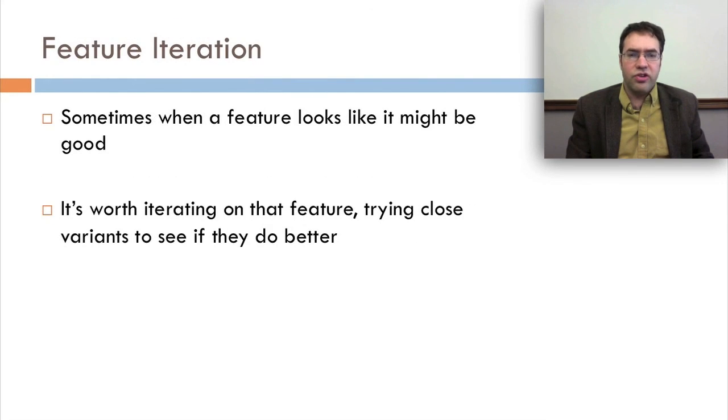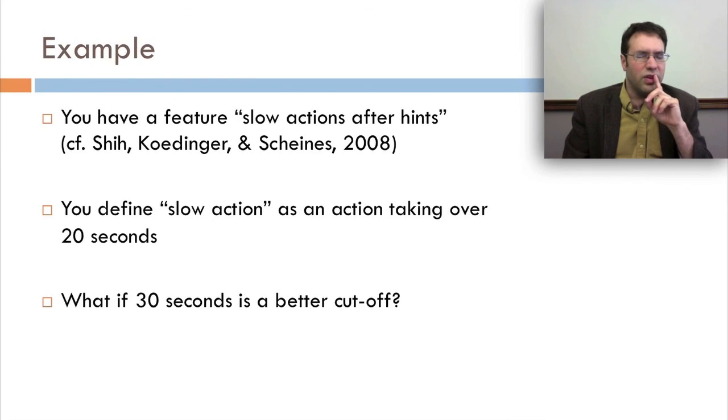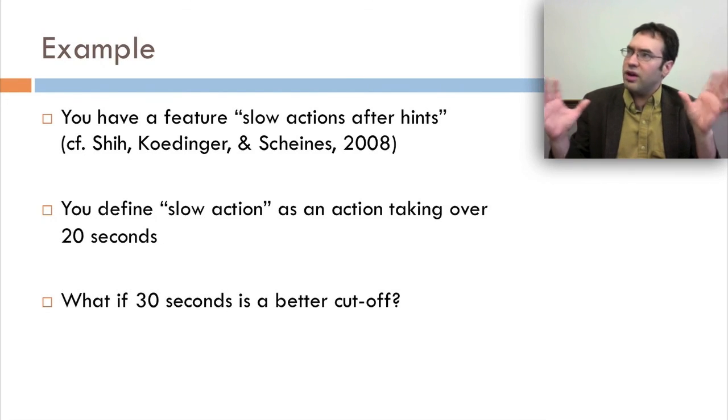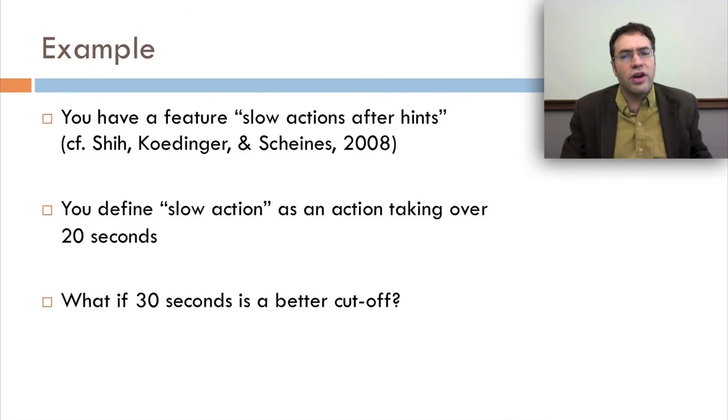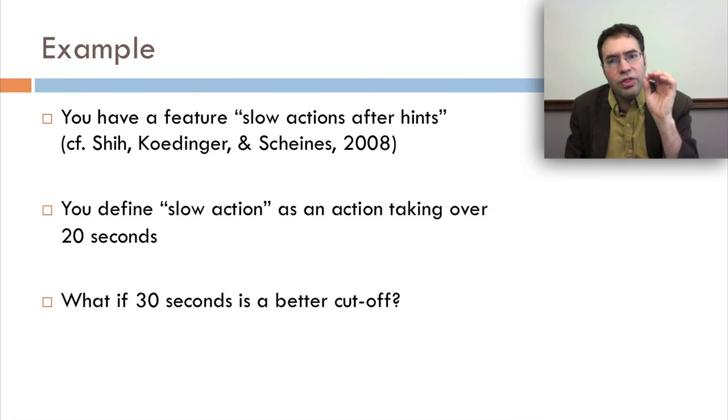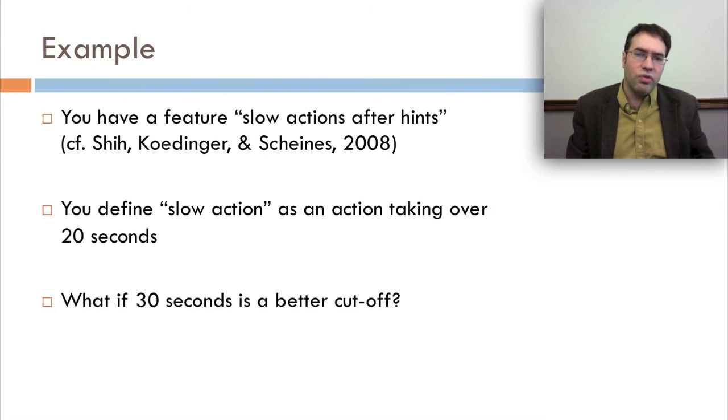Another important step in feature engineering is feature iteration. Sometimes when a feature looks like it might be good, it's worth iterating on that feature, trying close variants to see if they do better. For example, let's say you have a feature, slow actions after hints. And you define slow action as an action taking over 20 seconds. It's plausible, but what if 30 seconds is a better cutoff? What if 30 second actions or longer after hints actually are a better prediction of student learning because these hints take 30 seconds to read and think through?